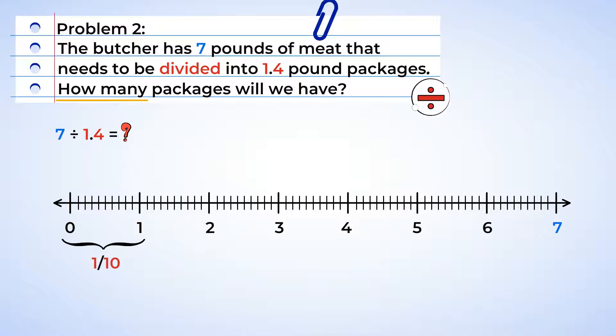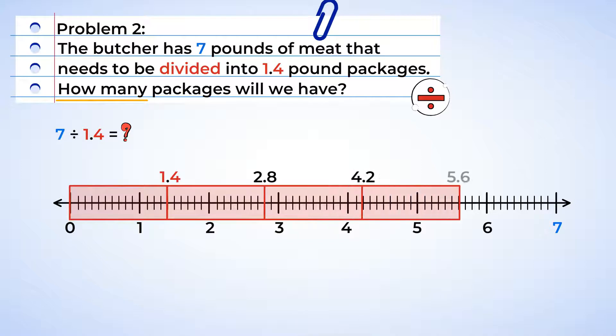And we're going to start at zero and go over one and four tenths, creating a group. Now, this is the size of one package. And now, we can move over another one and four tenths. Perfect. Two packages.